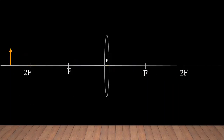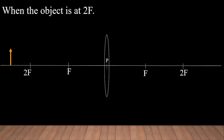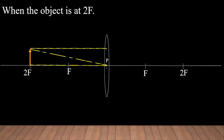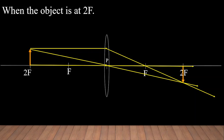Let us proceed to the next case. When the object is placed at 2F, let us see where the image is formed. The rays from this object after getting refracted from the lens form an image at 2F. When the object is at 2F, the image is also formed at 2F. The size of the image is the same as the object size, and the nature is real and inverted.